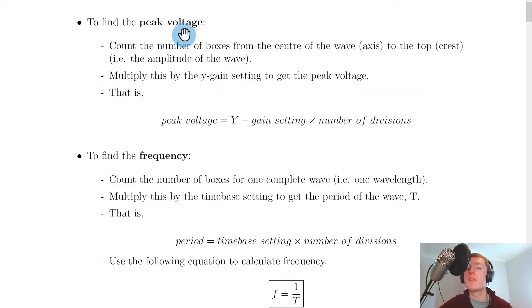To find the peak voltage, count the number of boxes from the center of the wave (the axis) to the top of the wave, the crest. In other words, find how many boxes form the amplitude of the wave. Then multiply this by the Y-gain setting to get the peak voltage. So, peak voltage equals Y-gain setting times the number of divisions for the amplitude.